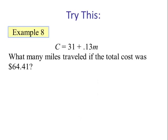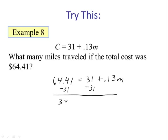The next question asks: How many miles traveled if the total cost was $64.41? In this question we want to find the number of miles, and we are given total cost. So C is $64.41. That is equal to 31 plus 0.13m.